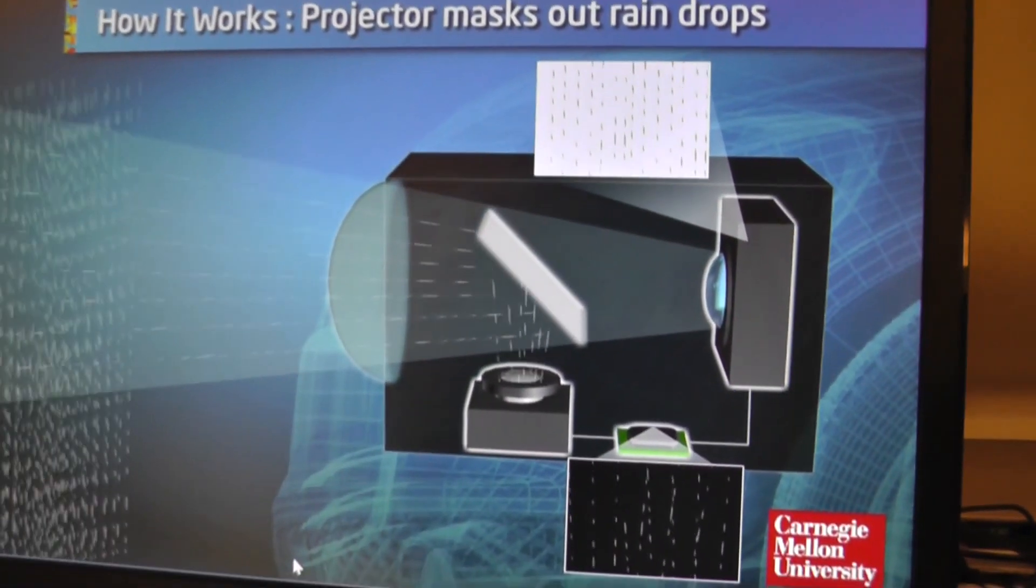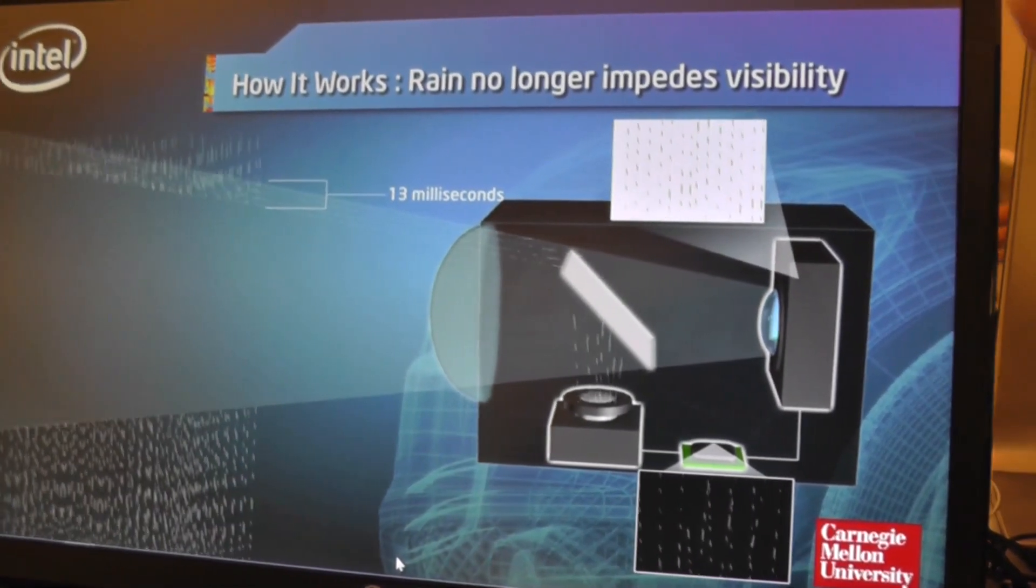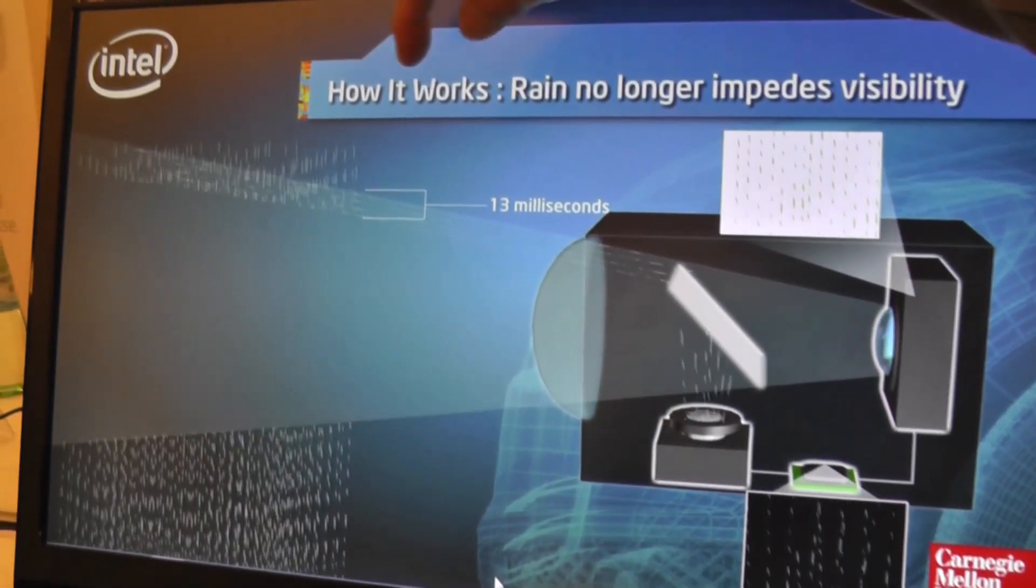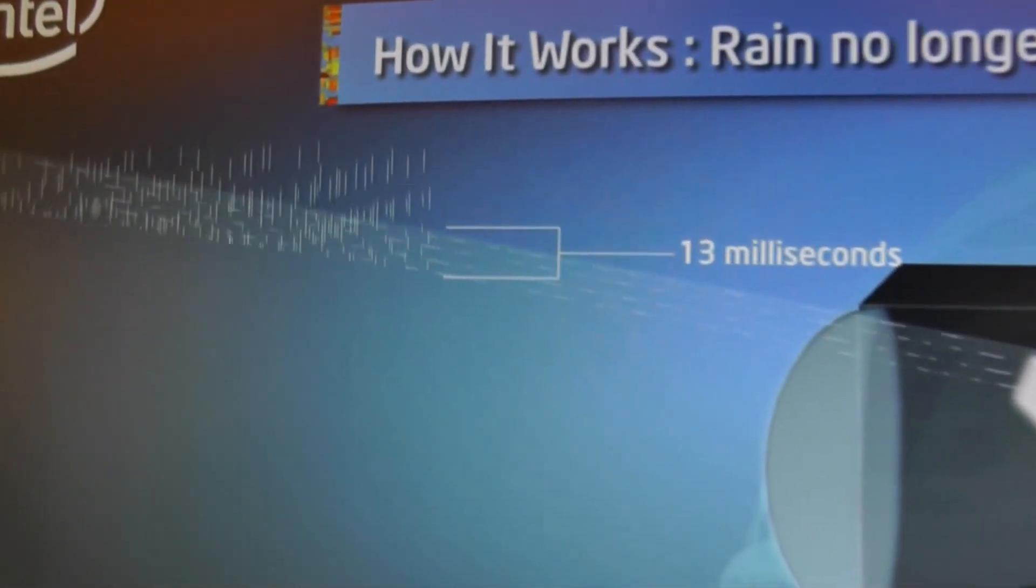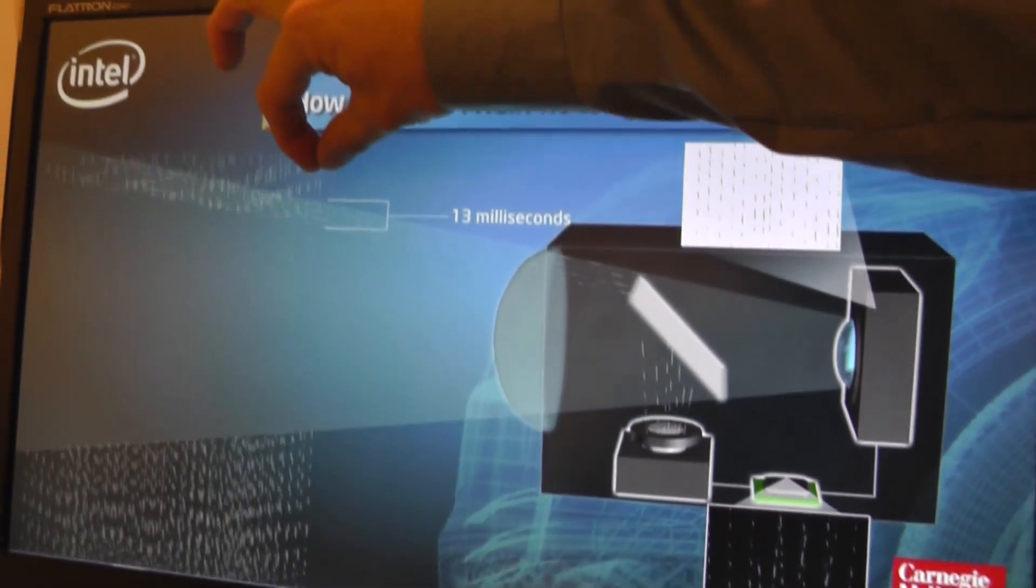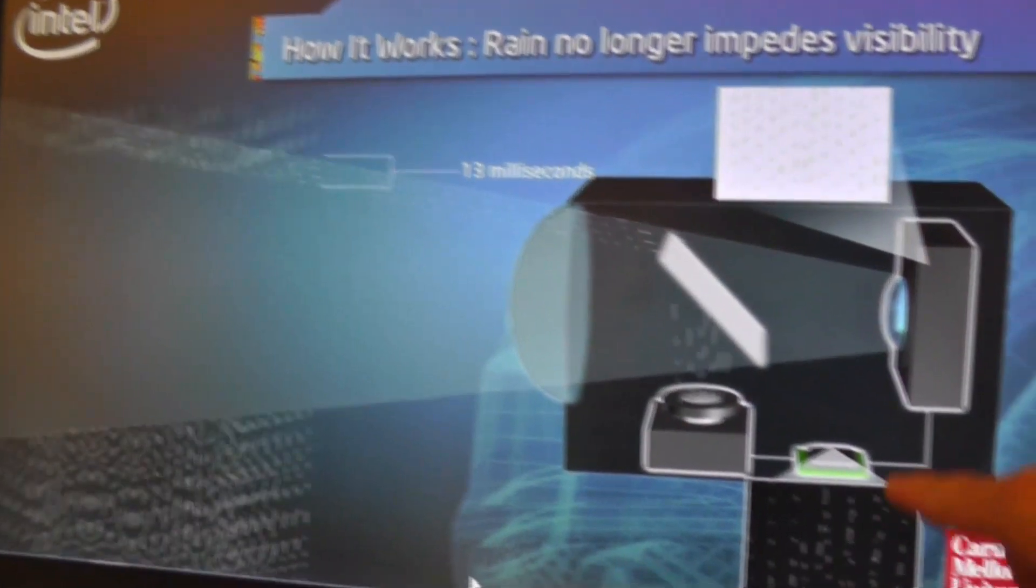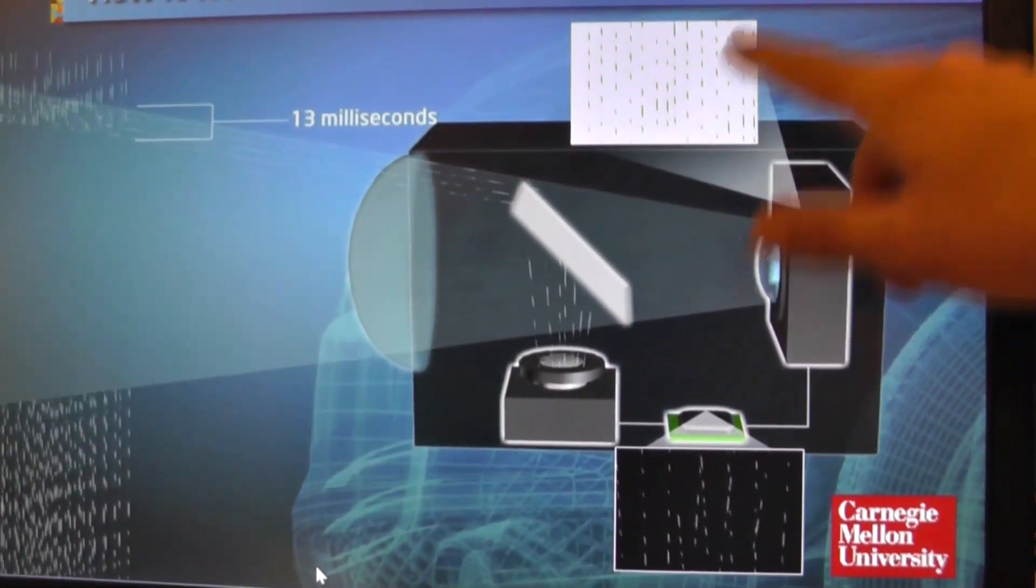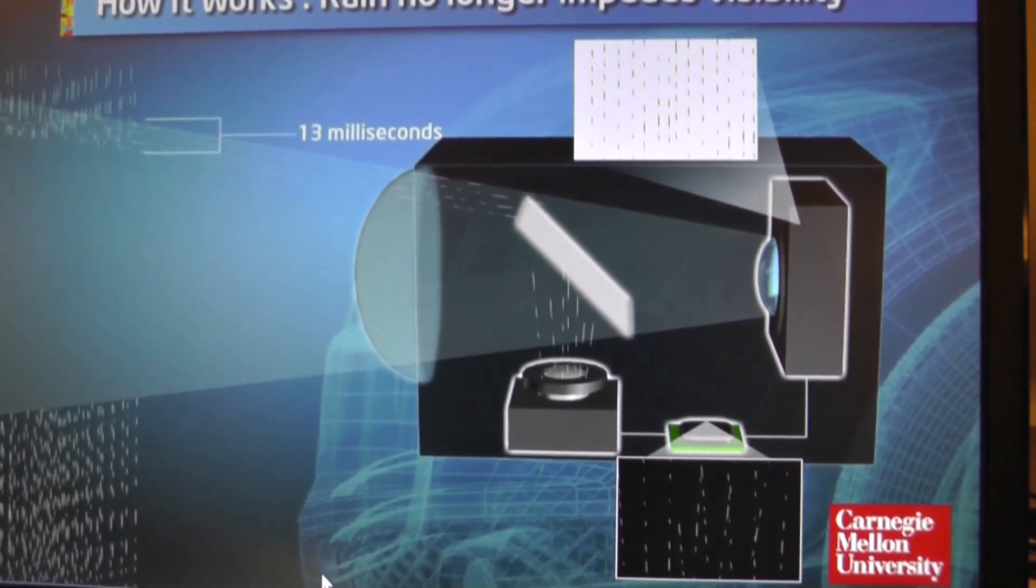The result of this is when we turn the system on you end up with a view that looks something like this. There's about a 13 millisecond delay, the latency of the entire system from as the raindrop enters the field of view of the camera to the point where we've calculated those future locations and can begin to mask those raindrops out of the headlight beam.